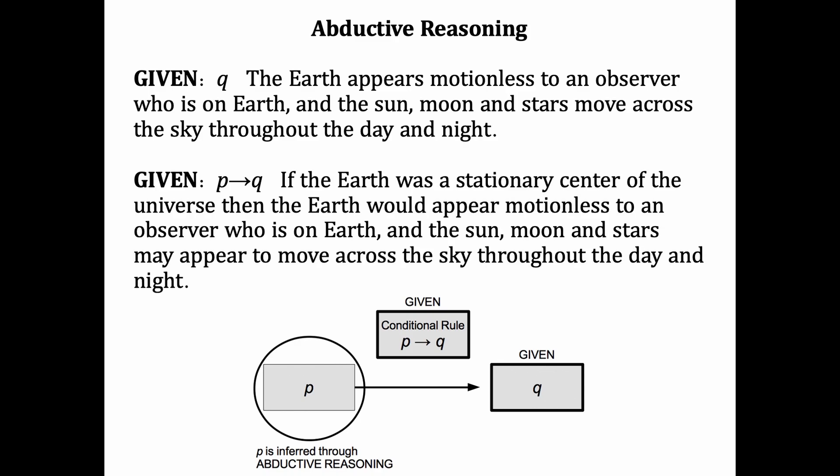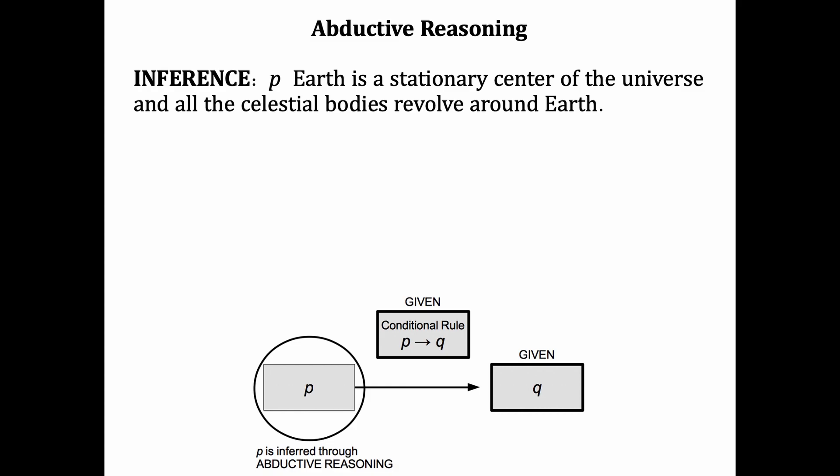They also assumed that if Earth were a stationary center of the universe, then Earth would appear motionless to anyone who's on it. And it is possible that the sun, moon, and stars could move across the sky throughout the day and night, revolving around Earth. And you can't blame people of the past for assuming the inference that Earth is a stationary center of the universe, and all celestial bodies revolve around us. It's a completely logical possibility. But we know now that it's actually not the case. And where ancient people got it wrong in many cases was that they said that P was definitely the cause for Q. They didn't understand that in abductive reasoning, it's always an assumption. It's always a guess.